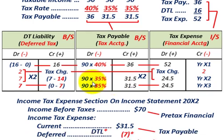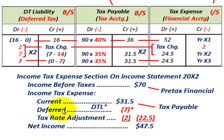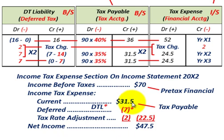Now let's look at the income tax expense section on the income statement for year X2. Income before taxes — pre-tax financial income — is $70,000. We break out income tax expense: current portion is $31,500 (our tax payable). The deferred portion reduces income tax expense by $7,000 due to the reversal of our deferred tax liability. The tax rate adjustment — because our rate dropped from 40% to 35% — reduces income tax expense by another $2,000. Netting $31,500 less $7,000 less $2,000 gives us net income tax expense of $22,500.